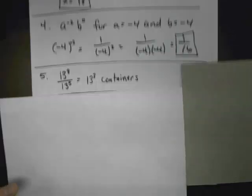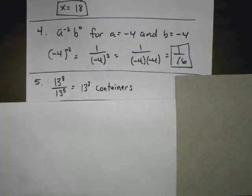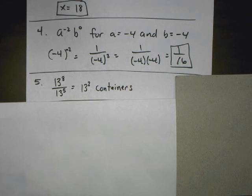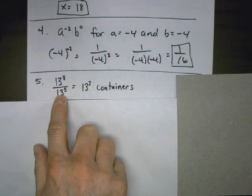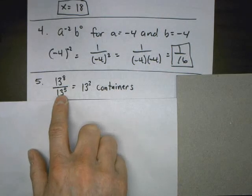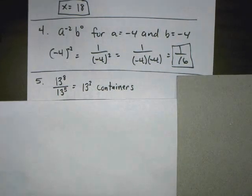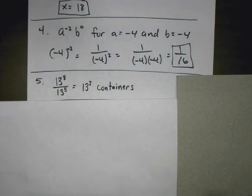Number 5: a container holds 3 to the 5th grains of sand. If there are 3 to the 8th grains of sand in your backyard, how many containers do you need? We take the larger number and divide by the smaller. Division means copy the base and subtract the exponents. 8 minus 5 is 3. So I need 3 to the 3rd power containers.